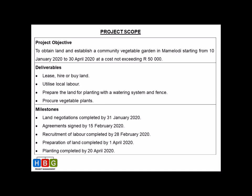First, what needs to be done — obtain land and establish a vegetable garden. Second, where must it be done — in Mamelordi. Third, when must it be done — that's your project timeline, from the 10th of January to the 30th of April. And fourth, how much is it going to cost — in this case, not exceeding 50,000 rand. Make sure you have at least those four elements in your project objective.